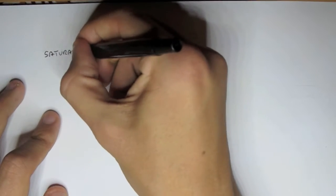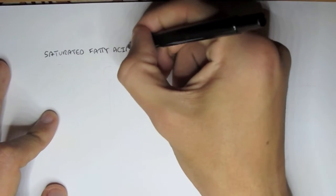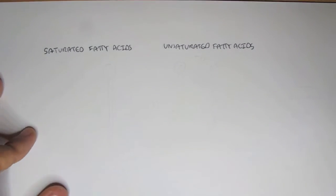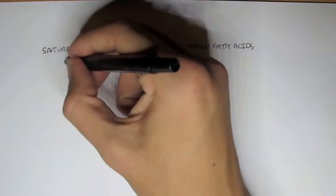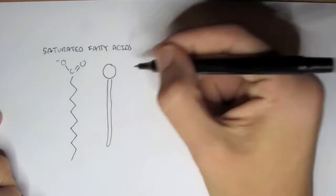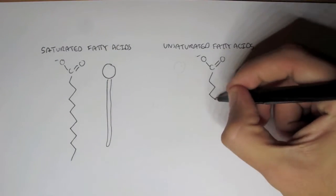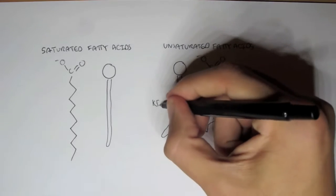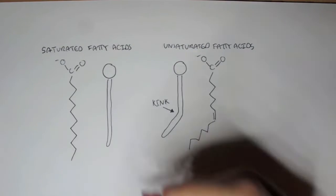We're continuing on with the cell membrane videos, looking back at saturated fatty acids and unsaturated fatty acids. So what are the differences? Saturated fatty acids have a carboxyl end with a hydrocarbon tail. Unsaturated fatty acid has a double bond in the carbon chain, and so it forms a kink.